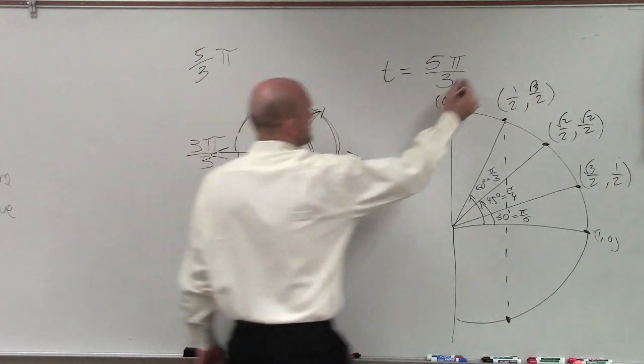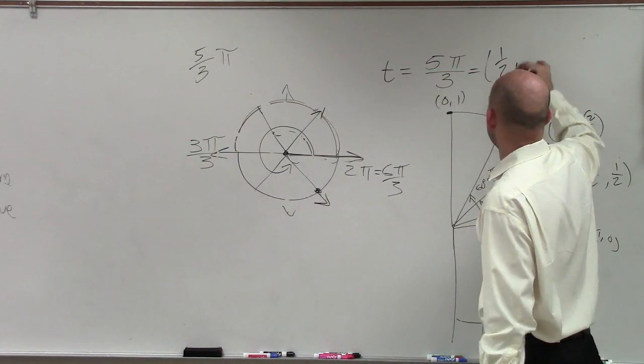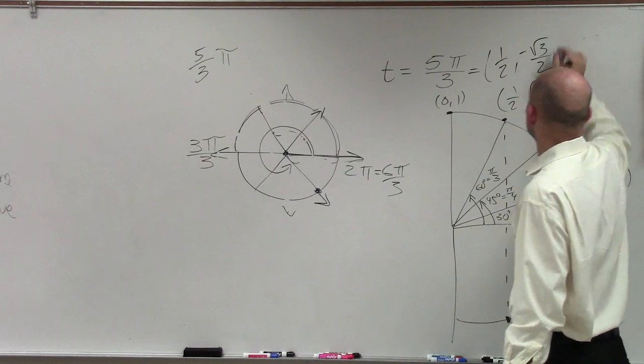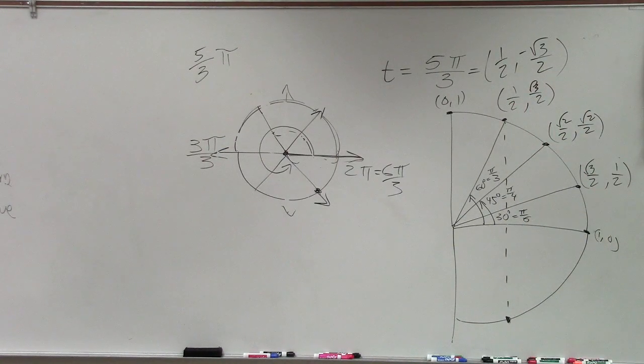So therefore, the point, ladies and gentlemen, at 5 pi over 3 is going to be 1 half, comma, negative square root of 3 over 2. It's a very, very long explanation.